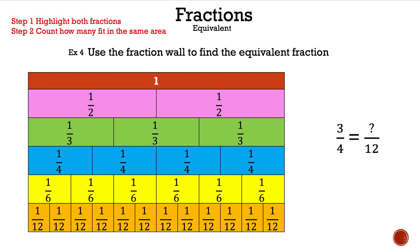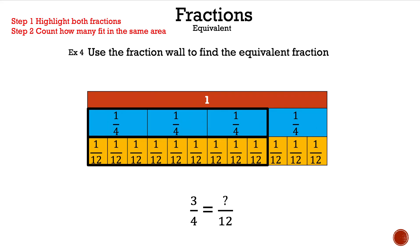Now let's take a look at example four: use the fraction wall to find the equivalent fraction. We need to find three over four equals something over twelve, so we're comparing the fourths and the twelves. We've highlighted three of the fourths because it says three fourths, and now we count how many twelves are in there: one, two, three, four, five, six, seven, eight, and nine. So three fourths is equal to nine over twelve.